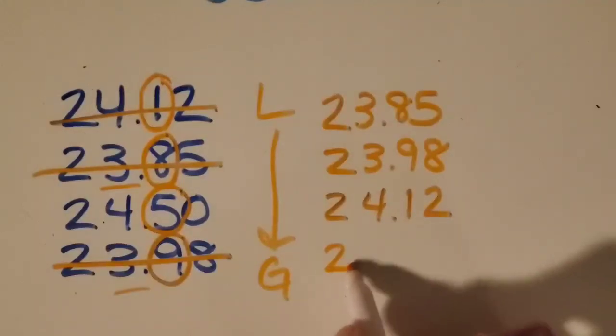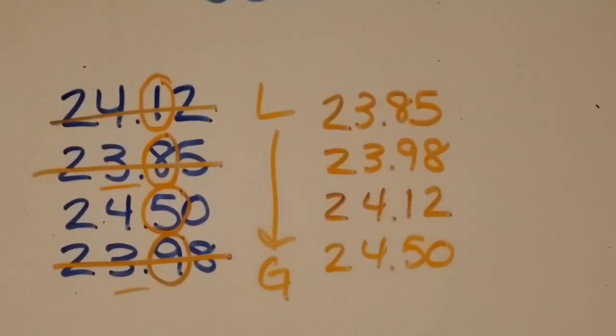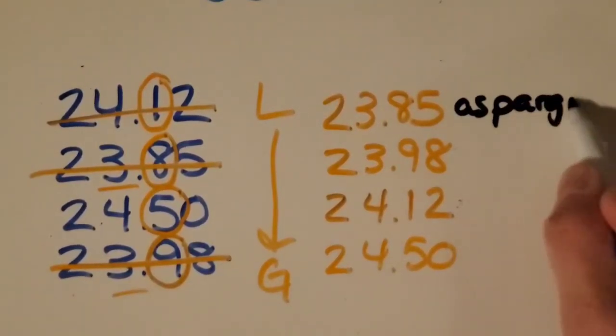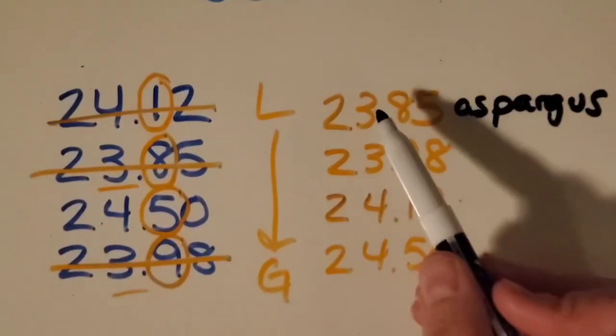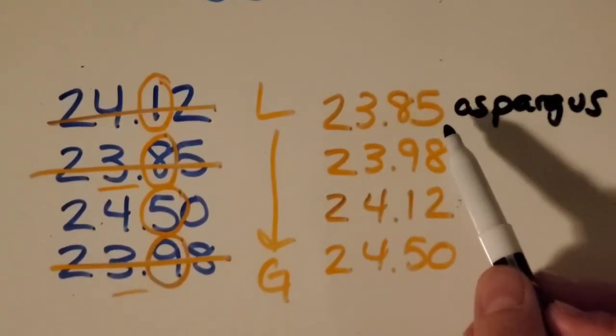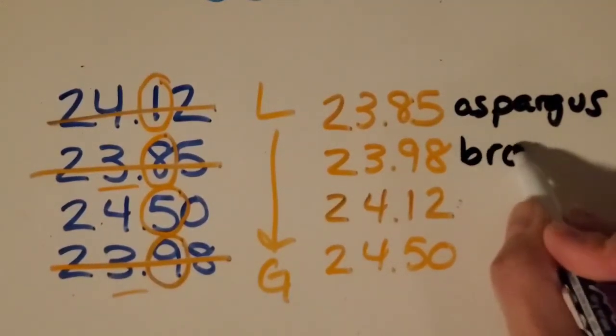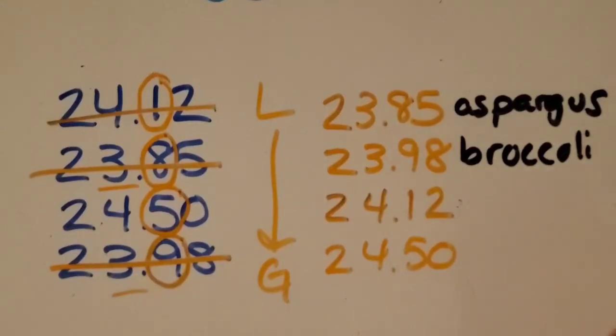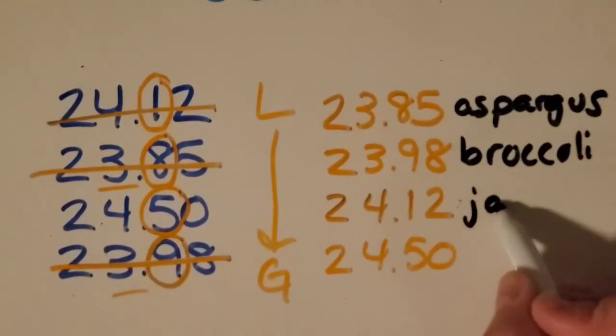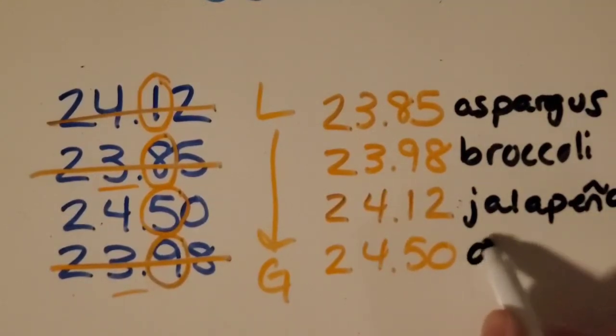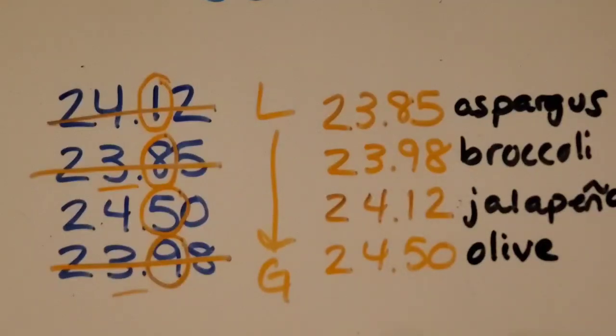Twenty-four and fifty hundredths. All right, great job to Asparagus, who won the race. His time is the least, which means he finished it the fastest. Then we had Broccoli in second place. Great job. Then Jalapeno in third place. And last place, Olive, but he still tried his best. Great job to all four veggies.